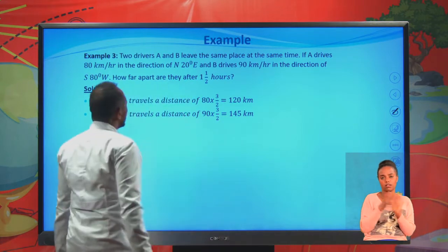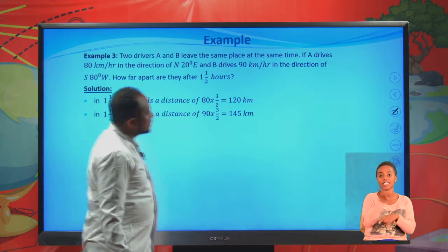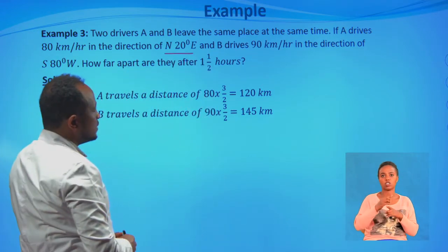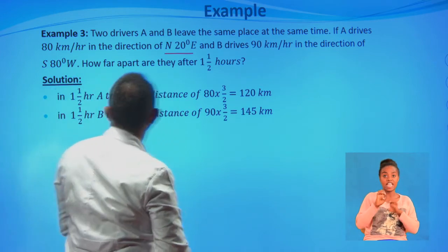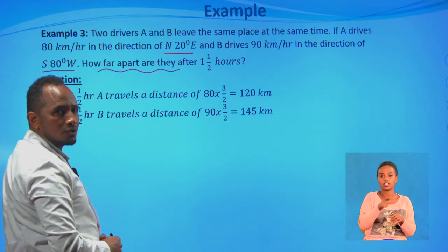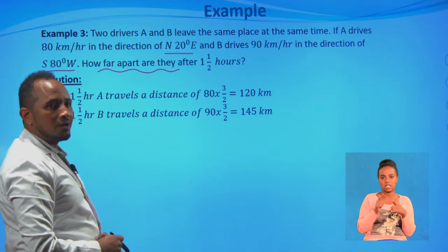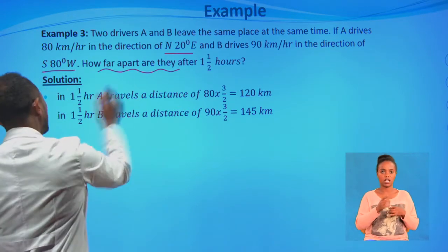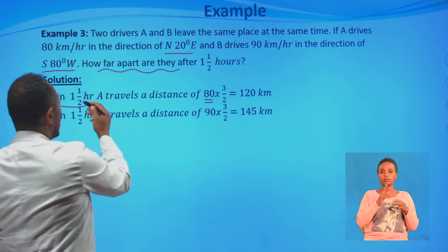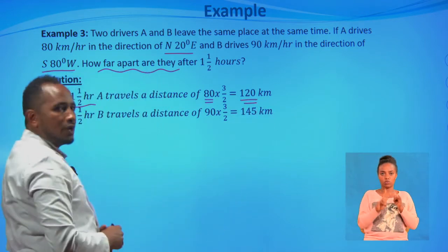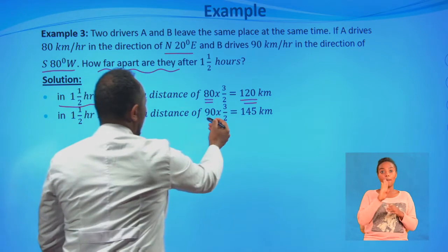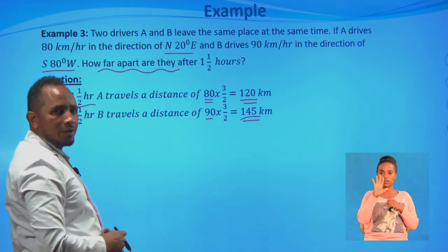Example 3: Two drivers A and B leave the same place at the same time. A drives at 80 kilometers per hour in the direction 20 degrees north of east, and B drives at 90 kilometers per hour in the direction south 80 degrees west. How far apart are they after one and a half hours? In one and a half hours, A travels 80 times 3 over 2, which equals 120 kilometers. B travels 90 times 3 over 2, which equals 135 kilometers.